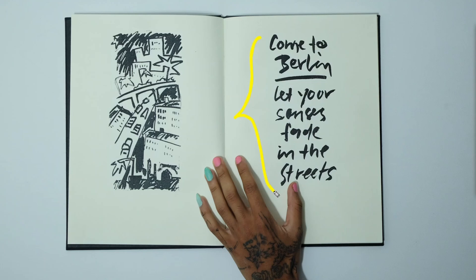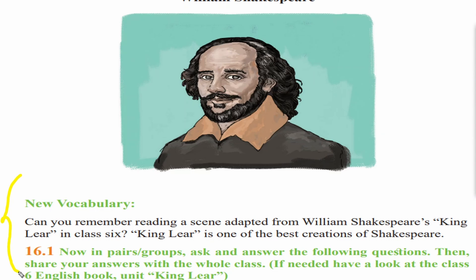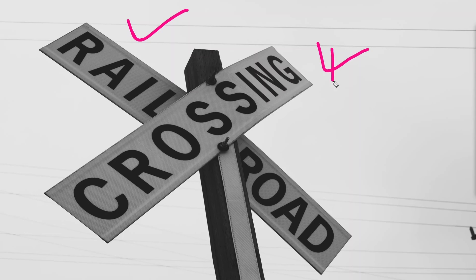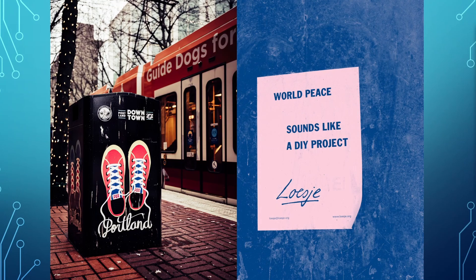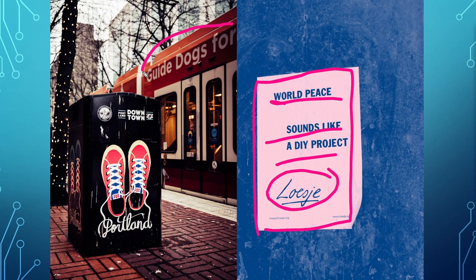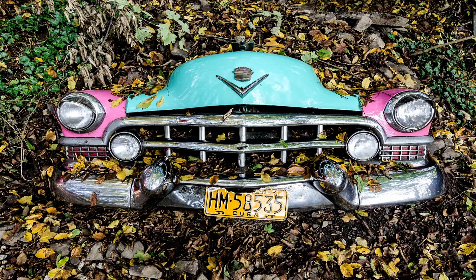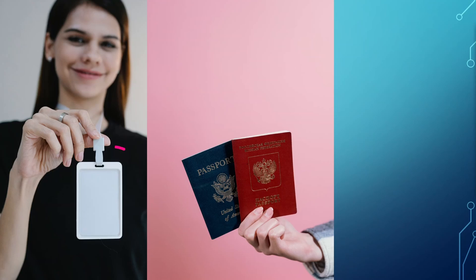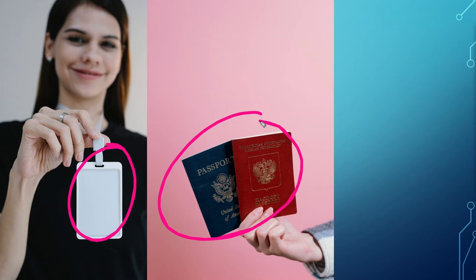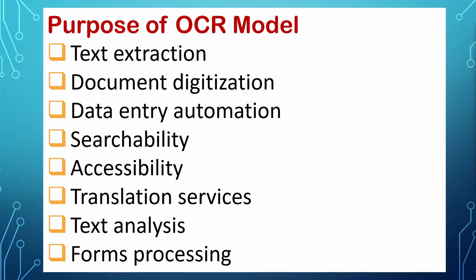Here you can see handwritten text, document text with complex layouts, simple document text, scene text over an image, a document copy, handwritten number plates, card number plate recognition, ID cards, and passports. This type of complex layout text is very critical to recognize, and not all OCR models are suitable for all types of text detection and recognition.